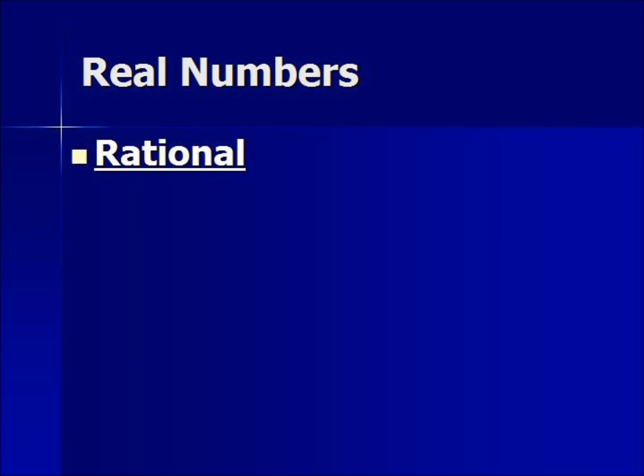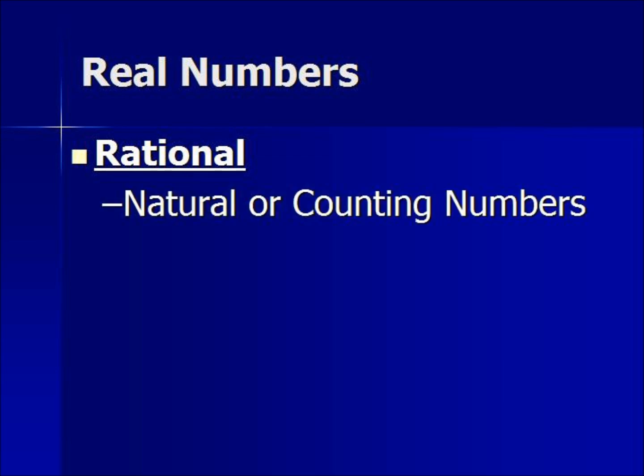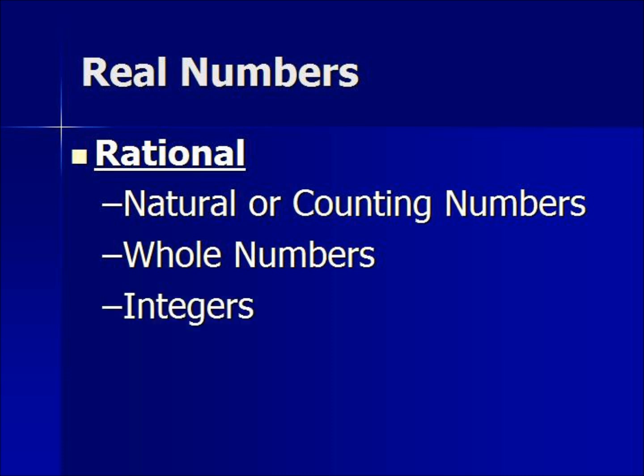First, we have all real numbers. Rational numbers are a subset, or a part, of all real numbers. Natural numbers — counting numbers — are a part of rational numbers, as well as whole numbers and integers. All these are subsets of rational numbers.